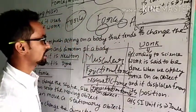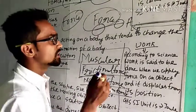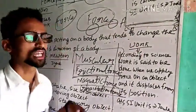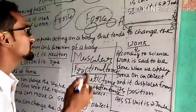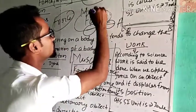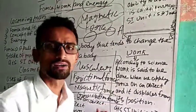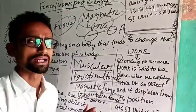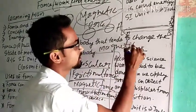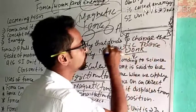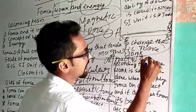Now talking about magnetic force. Magnetic force means the force that is generated by a magnet to attract magnetic substances. Magnetic substances are substances made up of iron, nickel, or cobalt — they can be attracted by magnets. A magnet exerts a force known as magnetic force, and it can attract objects made up of iron, nickel, and cobalt.